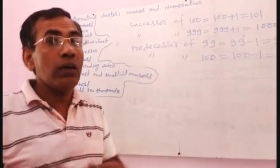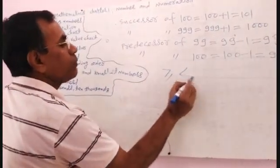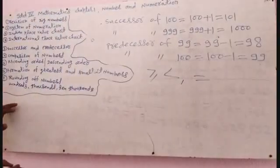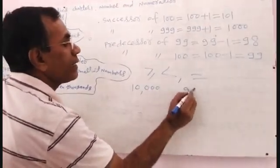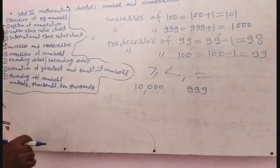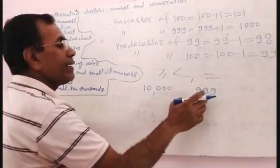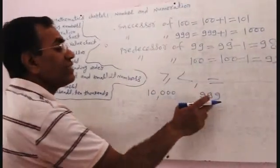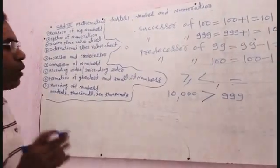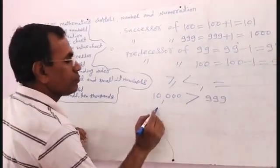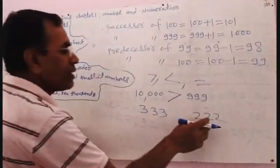These are the symbols: greater than, less than, and equal to. For example, 1000 and 999 — you have to put the symbol. 1000 is bigger and 999 is smaller. Another example: 333 and 222 — clearly 222 is smaller and 333 is bigger.